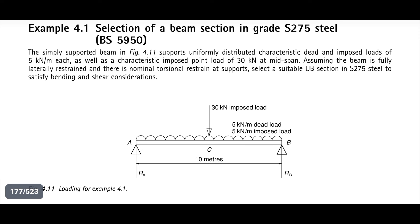Assuming the beam is fully laterally restrained and there is nominal torsional restraint at supports, select a suitable universal beam section in grade S275 steel to satisfy bending and shear considerations. So join me as we tackle this question together. Please don't forget to subscribe.